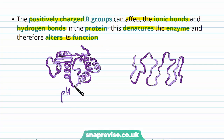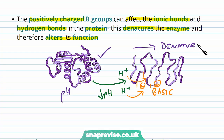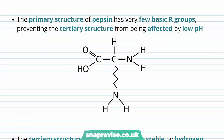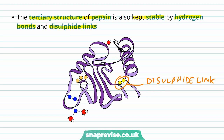Most proteins in the stomach environment would break down and lose their function at low pH, because they have a high concentration of basic R groups that accept hydrogen ions, become more positively charged, and change shape overall. The benefit with pepsin is that its primary structure contains very few basic R groups, so the tertiary structure is not affected by the low pH. Additionally, the tertiary structure of pepsin is kept stable by hydrogen bonds and disulfide links between various amino acids, as shown here with the various disulfide links and other interactions keeping it in shape.